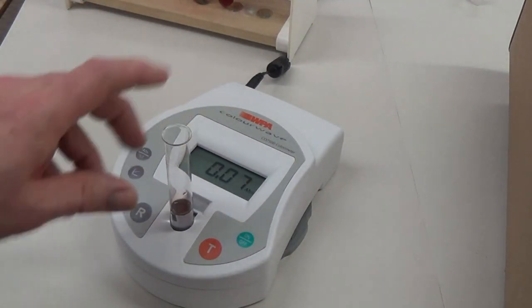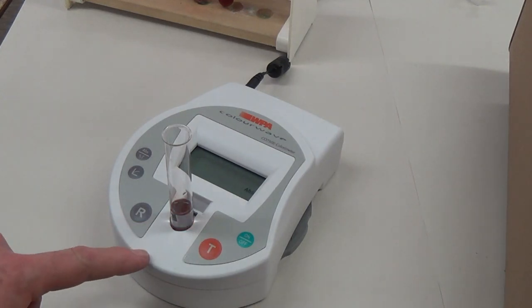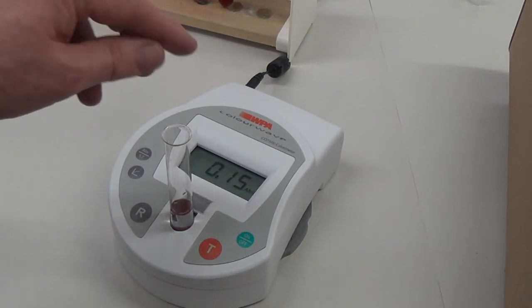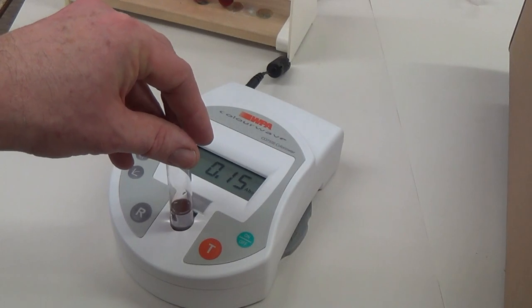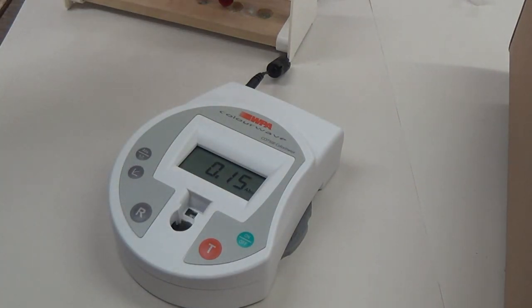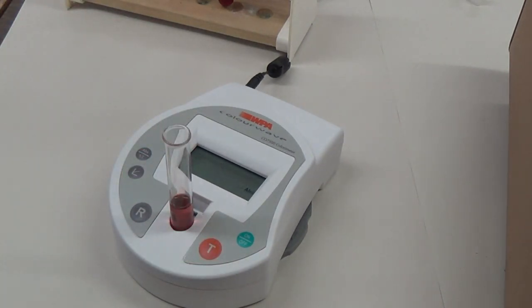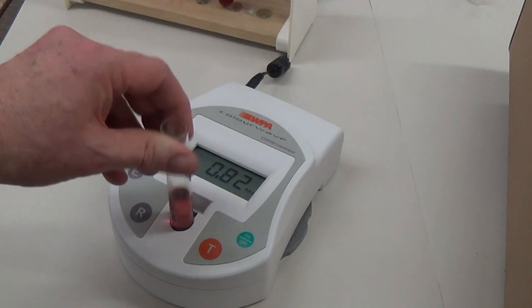Next dilution. These could be results from, for example, looking at beetroot pigments that have been produced at different temperatures, looking at the effects on the cell membrane of beetroot. 0.82.